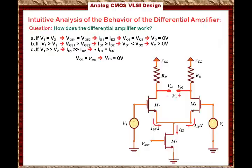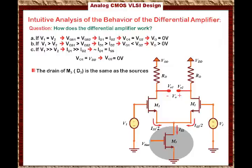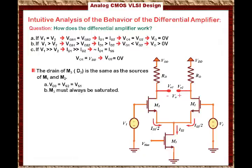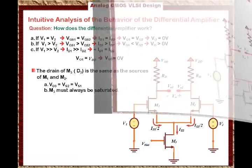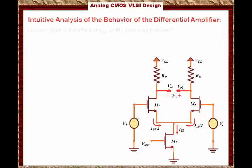There is another important note about the bias transistor M3. Note that the drain of M3, which is D3, is the same as the source of M1 and M2. That means Vd3 equals Vs2 equals Vs1. We also know that M3 must always be saturated — if it is not saturated, the circuit will not work properly, and it will have other problems. The question is: what is the effect of the common mode voltage on M3 in the circuit?